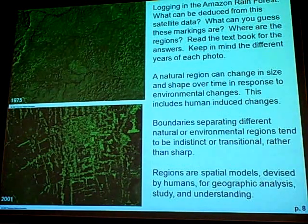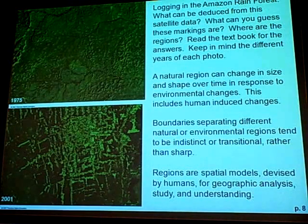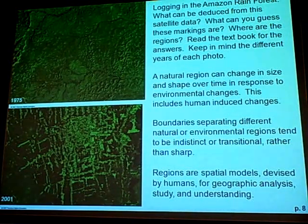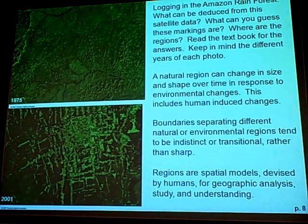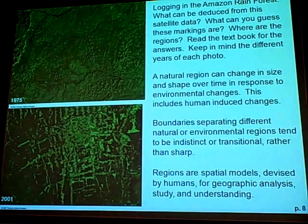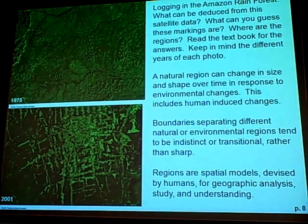These are some before and after pictures of logging in the Amazon rainforest. As you can see, there are different patterns happening here — different geography to what's going on. If you look at these slides, one of the clearest things you would see is these lines. What's going on with these lines? Why are these patterns in lines? The answer is roads — you've got to have roads to haul off that lumber they're cutting down there. That's why you have that pattern.